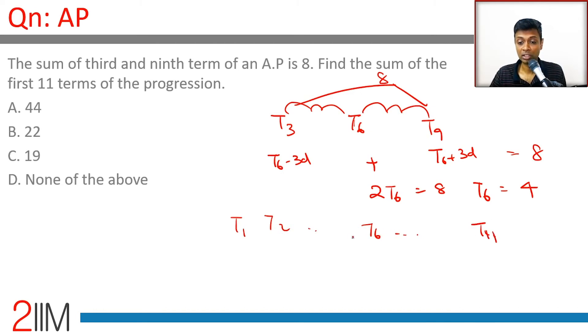Think about it: T5 plus T7—this is T6 plus D, T6 minus D. These two will add up to 2T6. The next two will add up to 2T6. This and this will add up to 2T6. Or sum of 11 terms, it's just 11 times the sixth term.